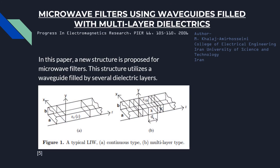Microwave filters are required in many communication circuits. Many structures have been introduced for microwave filters which utilize microstrips or waveguides. In this paper, a new structure is proposed for microwave filters: a waveguide filled by several dielectric layers. The proposed structure is a multi-layer longitudinally inhomogeneous waveguide, otherwise known as LIW.